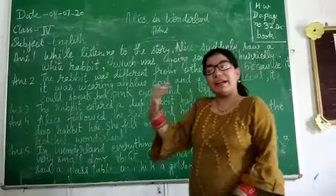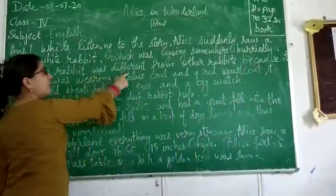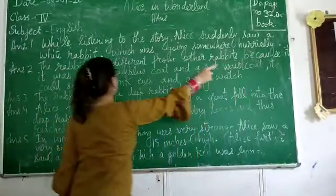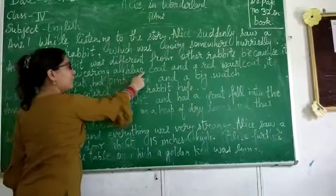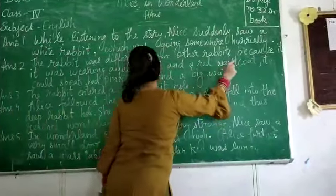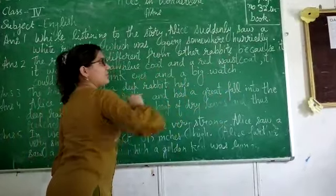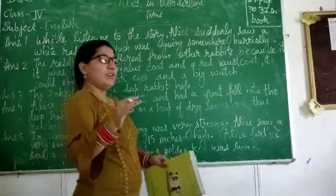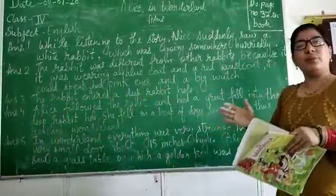This rabbit was different from other rabbits. The rabbit was different because it was wearing a blue coat and a red face coat. It could speak, had pink eyes, and a big watch. Yes, these are the features which differentiate this rabbit from other rabbits.